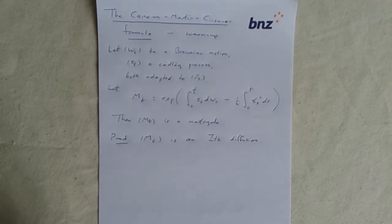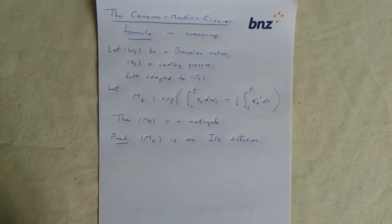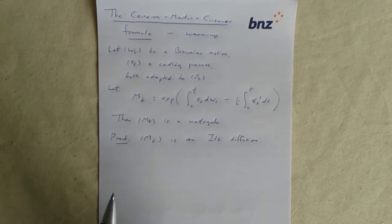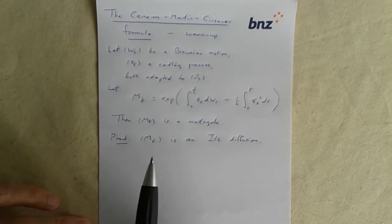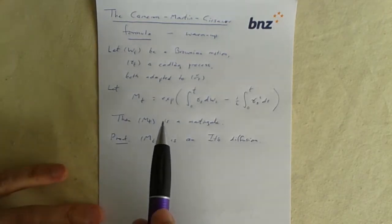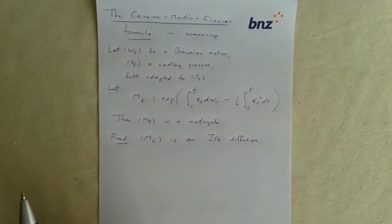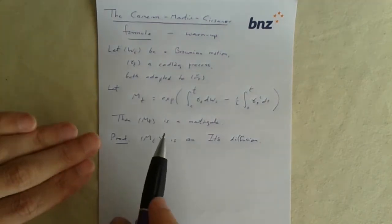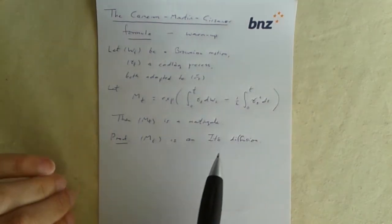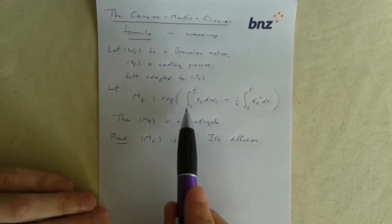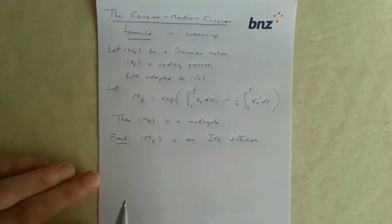Now we see what we need to do. When you're dealing with Itô diffusions, the ones that are martingales are the ones that have zero drift. So we need to work out the drift of this object M_t. We have Itô's lemma applied to the exponential function of something, and we know how to calculate the drift of the whole thing in terms of the drift of what's inside. So let's do that.